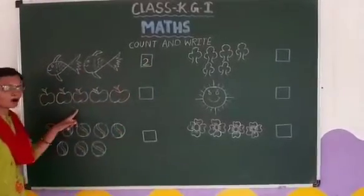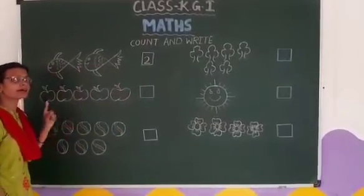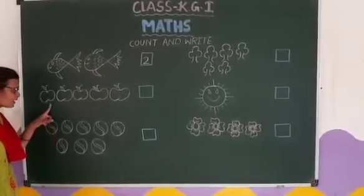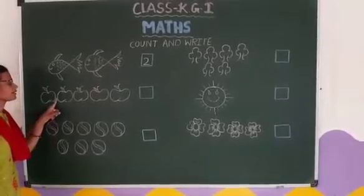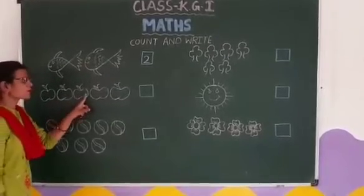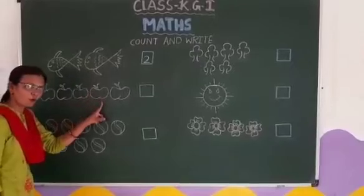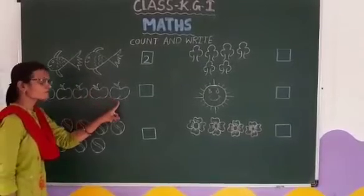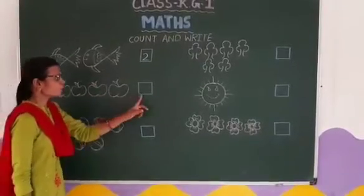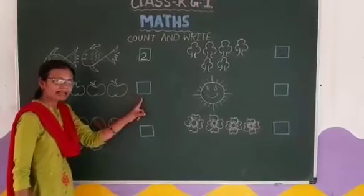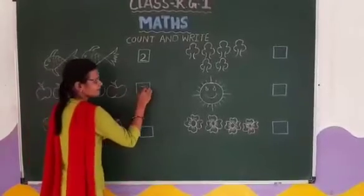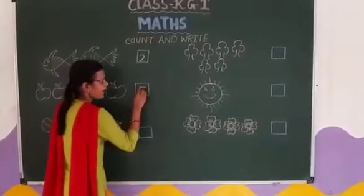How many apples are here? Count with me. 1, 2, 3, 4, 5. 5 apples. So we will write 5 here. 5 apples.